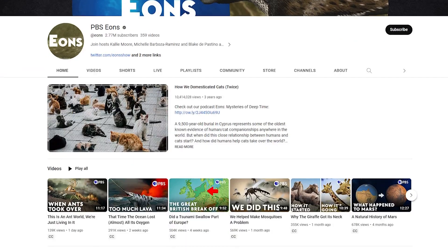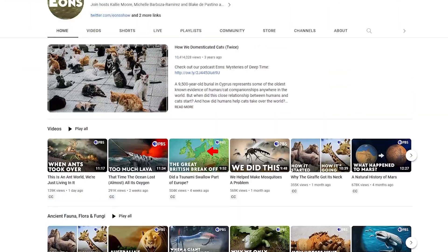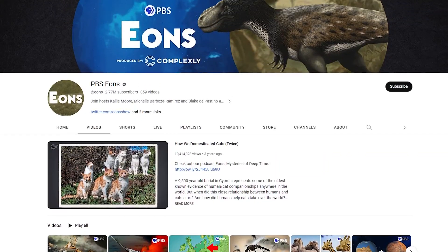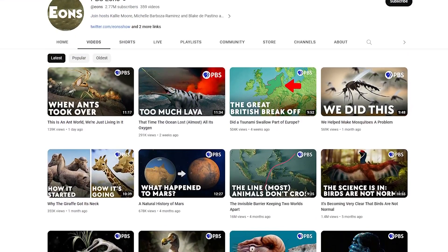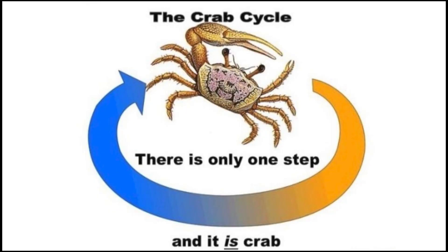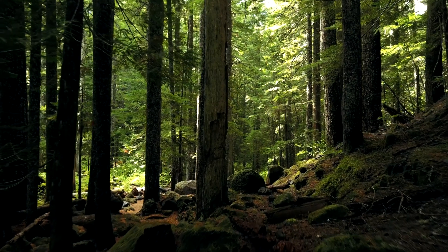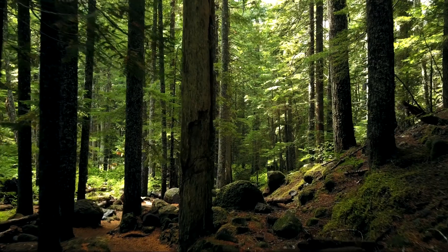If you've seen the 2020 PBS Eons video 'Why Do Things Keep Evolving Into Crabs,' you're probably familiar with the phenomenon coined carcinization — a trend in crustacean evolution where multiple species converge on the crab body plan. You're also probably familiar with the phrase 'return to crab,' a joke spawned after this video. However, the phenomenon is really only relegated to decapods, and its extent has been entirely overstated. But something far more extensive lies in the kingdom of life two doors down.